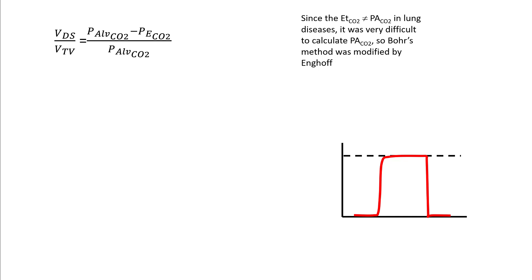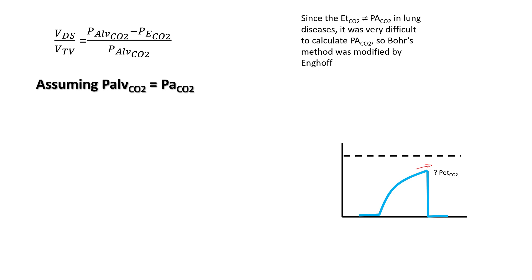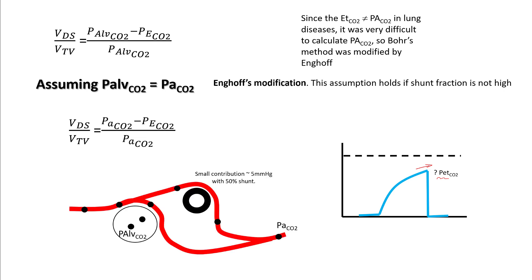However, in many pulmonary diseases it's very difficult to calculate the P alveolar CO2. For example, in diseases like COPD you can have a shark fin appearance on the capnogram and you don't know where your end tidal is, as your CO2 continues to rise. So Enghoff made an assumption that your P arterial CO2 is approximately equal to P alveolar CO2. This fits most conditions, as you already know that P arterial CO2 is only 2 to 3 mmHg higher than P alveolar CO2, and even in patients with pretty large shunts, P arterial CO2 is higher by only 5 to 6 points — so this is a decent approximation even in extreme situations.